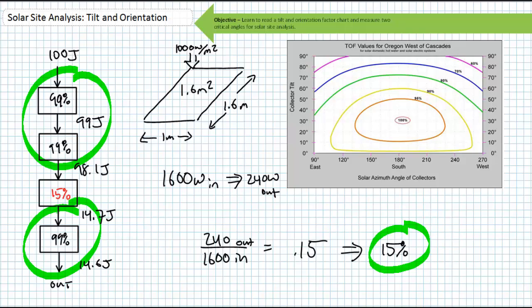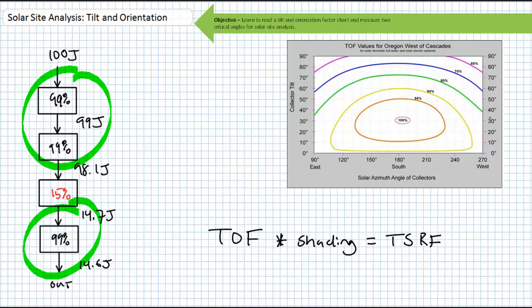TOF, in addition to shading, makes up something called the TSRF, or Total Solar Resource Fraction. We'll go into shading and TSRF in later lectures. For now, we're just looking at how tilt and orientation affect the exposure efficiency of a fixed PV panel.